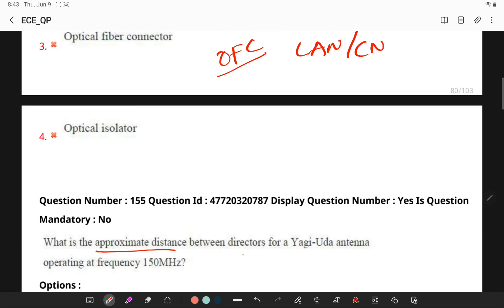What is the approximate distance between directors for Yagi-Uda antenna operating at a frequency of 150 megahertz? We know wavelength formula is given by lambda is equal to c by f.